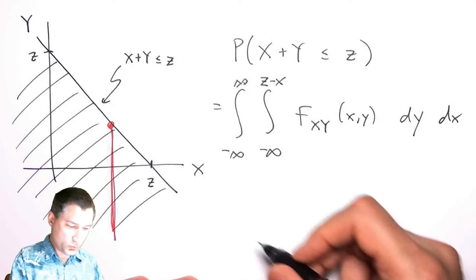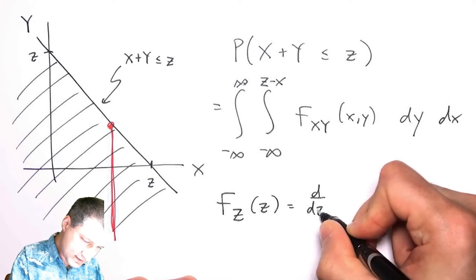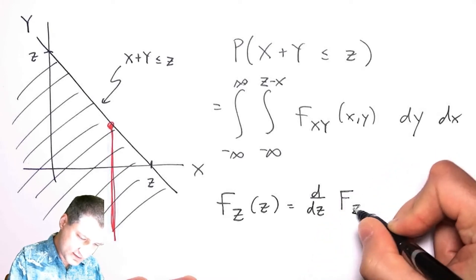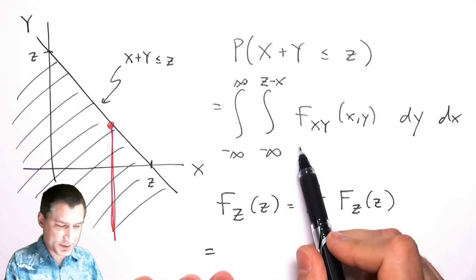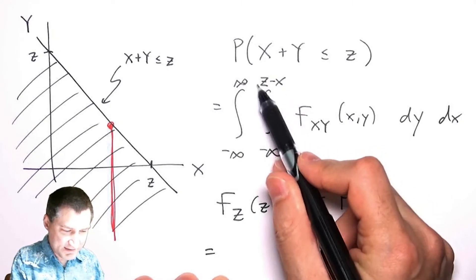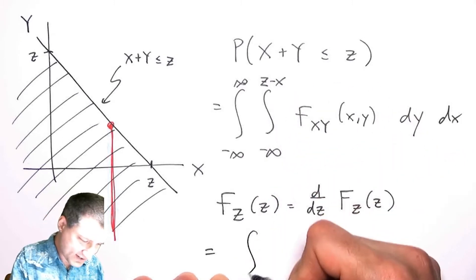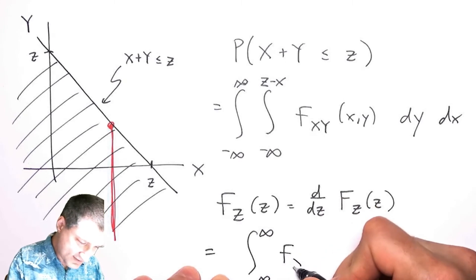And my PDF would be the derivative d/dz of the CDF. So what would happen if I took the derivative of this with respect to z? Well, that's like saying the inner integral, this part would hop into the y area.